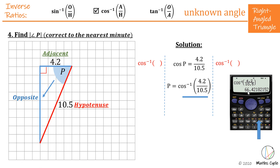The question asks for the nearest minute, so we have to change this from decimal form into degrees, minutes and seconds. Press the degrees-minutes-seconds button and it converts to 66 degrees, 25 minutes, 18.56 seconds. The double dash means seconds — just like time, it's all base 60.